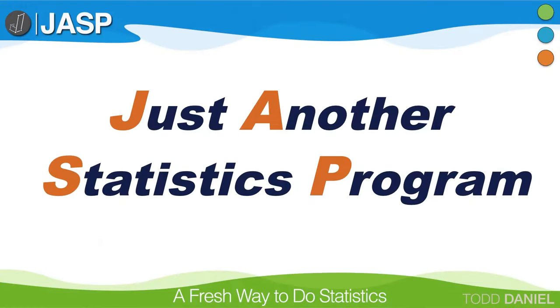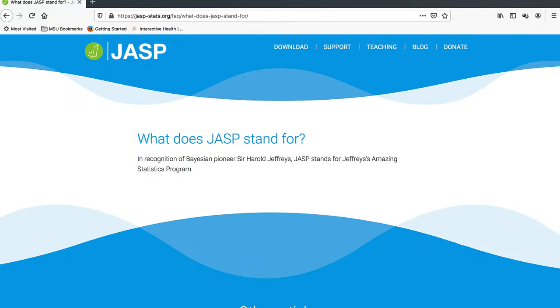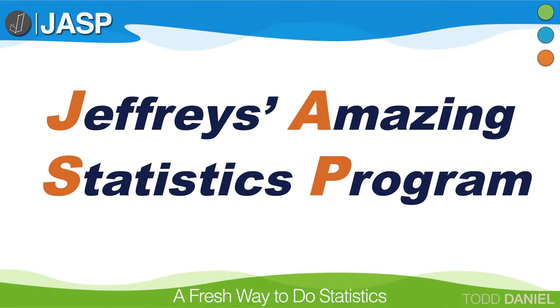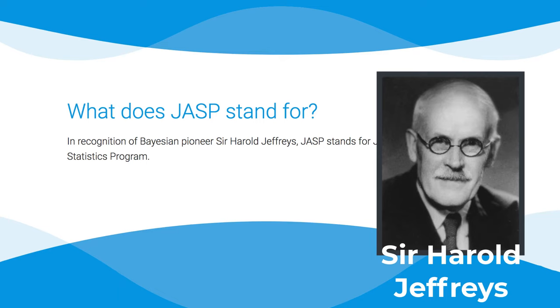Many people ask what the JASP name stands for. For the longest time, it was politely understood to be an acronym that did not stand for anything, and the joke was that it certainly did not stand for 'just another statistics program.' But now the JASP name has an official meaning: Jeffries Amazing Statistics Program. It is named for Sir Harold Jeffries, the great Bayesian statistician. That's our story and we're sticking to it. So let's get started — meet me in the next video, and we will get acquainted with the JASP workspace.